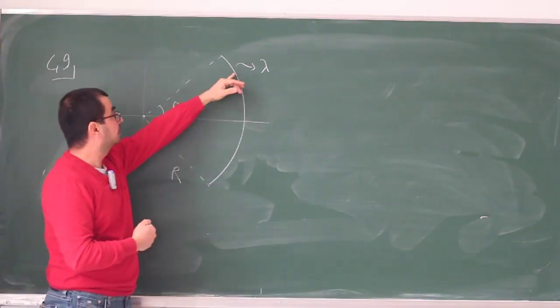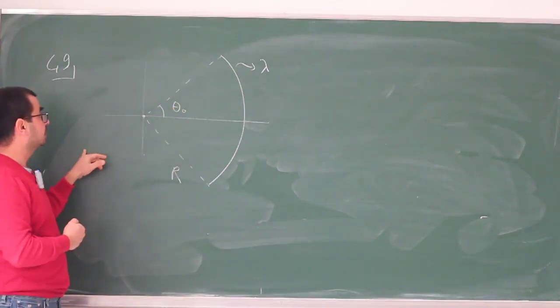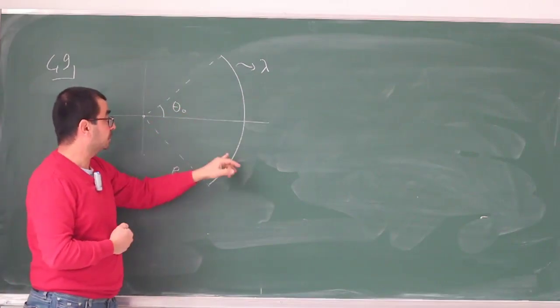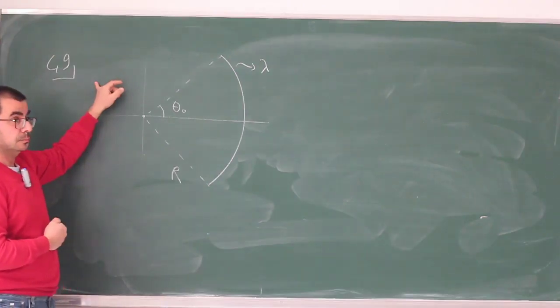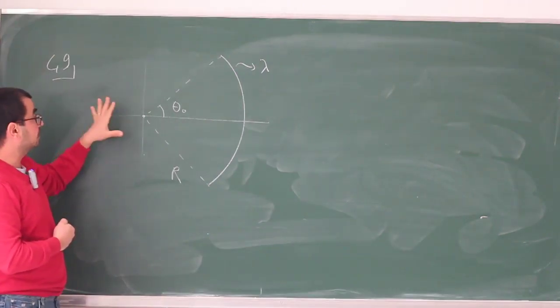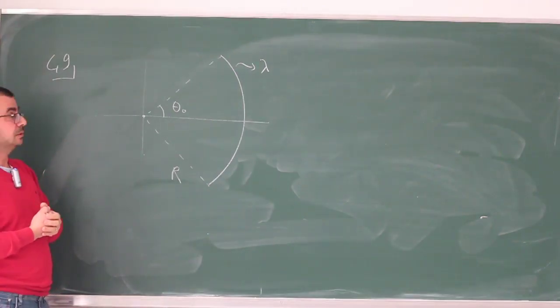For every piece that produces an electric field with a downward component, there is going to be a corresponding piece that's going to produce the exact same upward vertical component, and they are just going to cancel. The resulting electric field is going to be just horizontal.